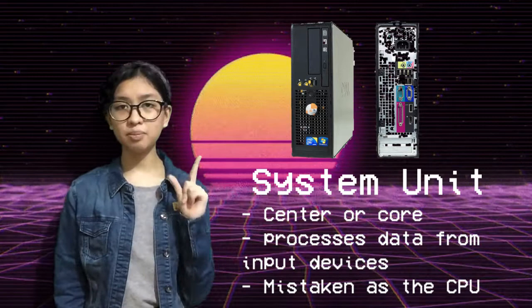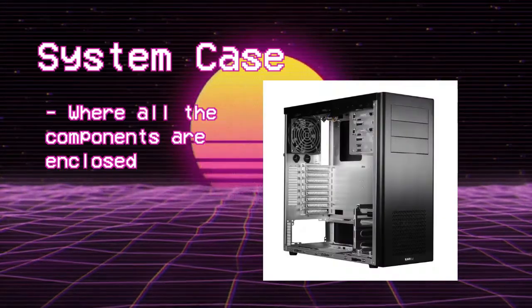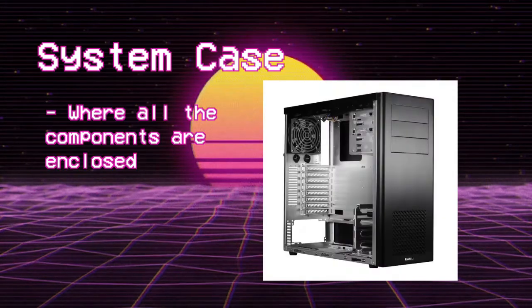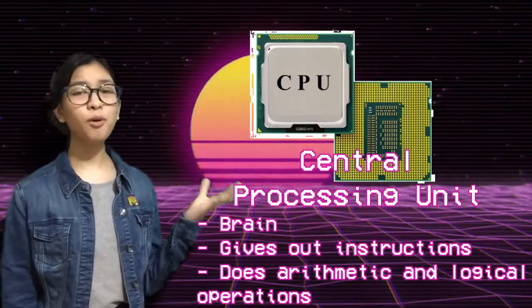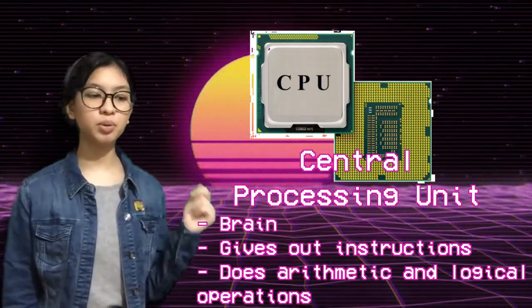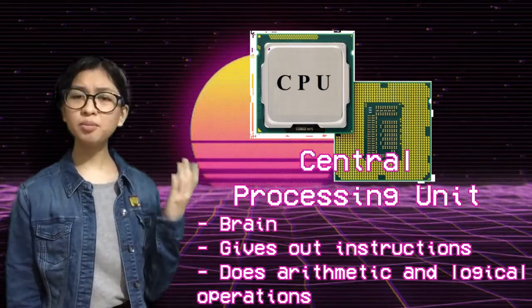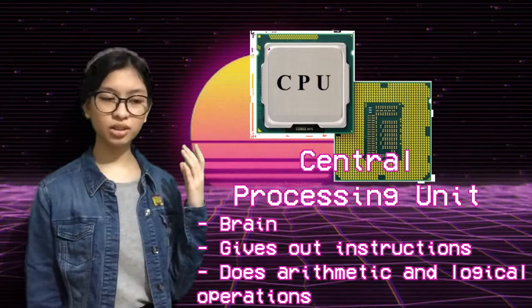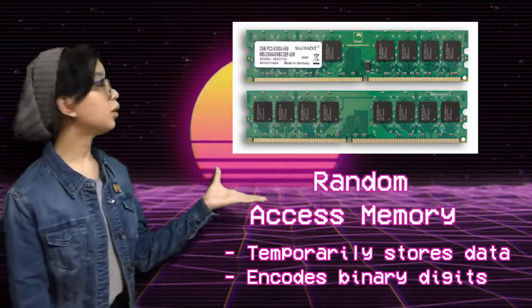The system case is where all the components are stored. The CPU, or the central processing unit, is the brain of the computer. It gives out instructions and performs arithmetic and logical operations.